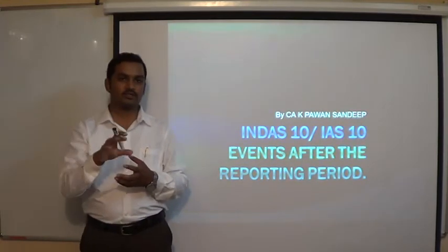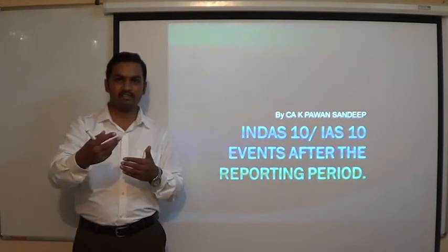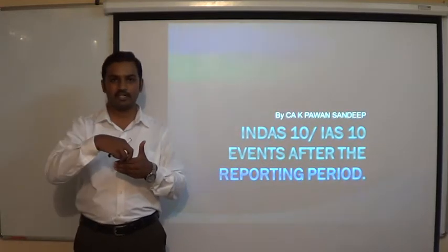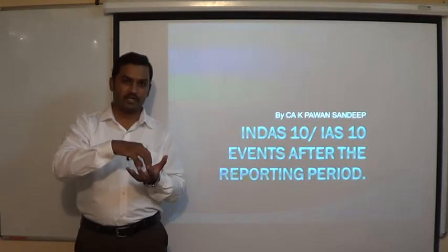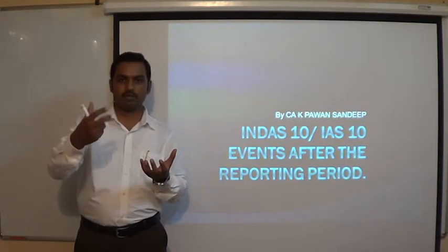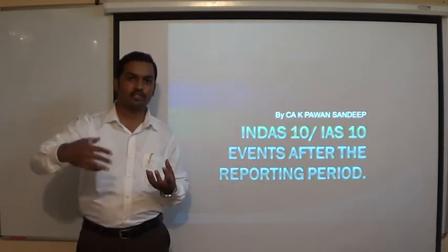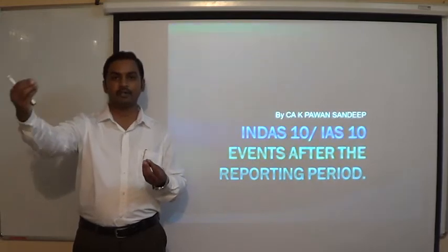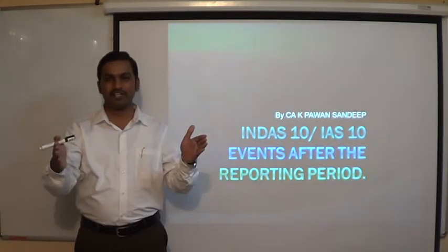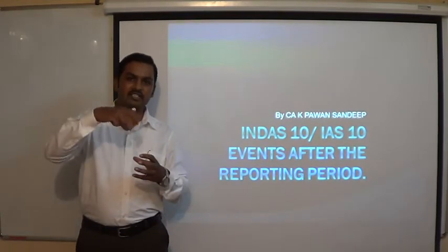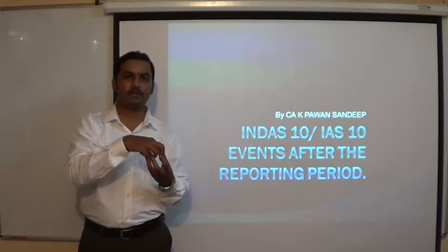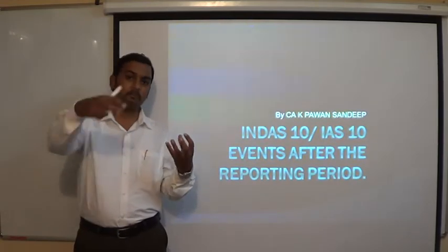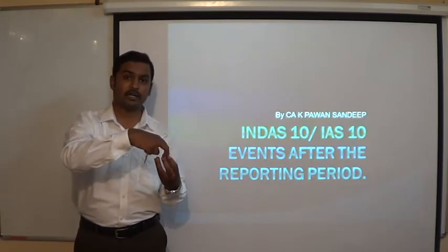31st March is a cut-off date. But there can be certain situations where an event takes place after the balance sheet date and yet has an impact on the values reported on the balance sheet date. For example, we are preparing our balance sheet on 31st March 2016, and the board is going to approve it. Normally, before the financial statements are submitted to the shareholders for adoption in the annual general meeting, the board of directors approves them. After the balance sheet date and before the financial statements are approved by the board, events can happen which can impact the values reported in the balance sheet.